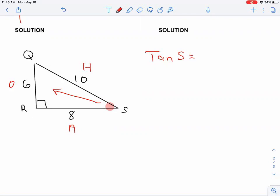So if tangent is opposite, which is 6, over adjacent, which is 8. And then we reduce it and we get three-fourths.